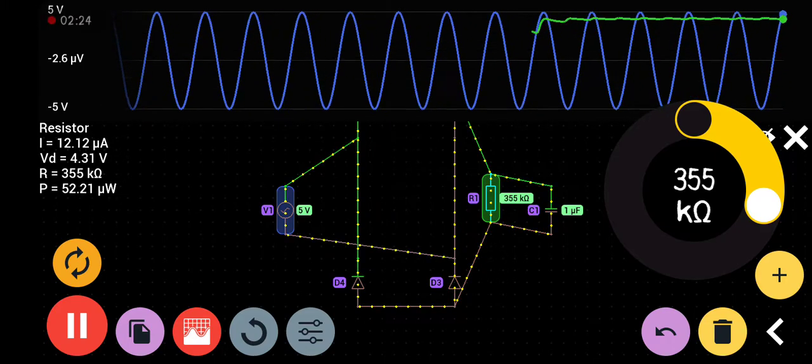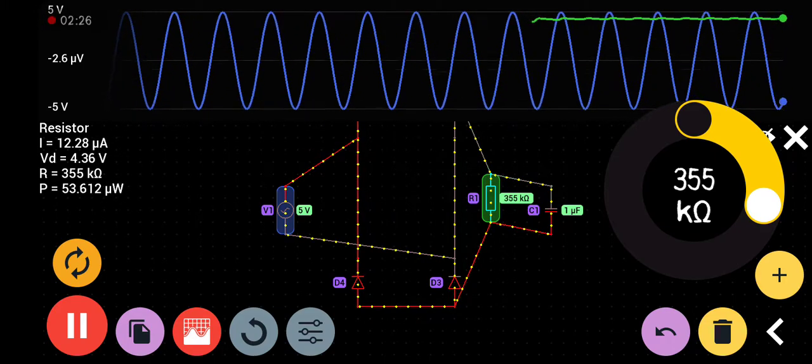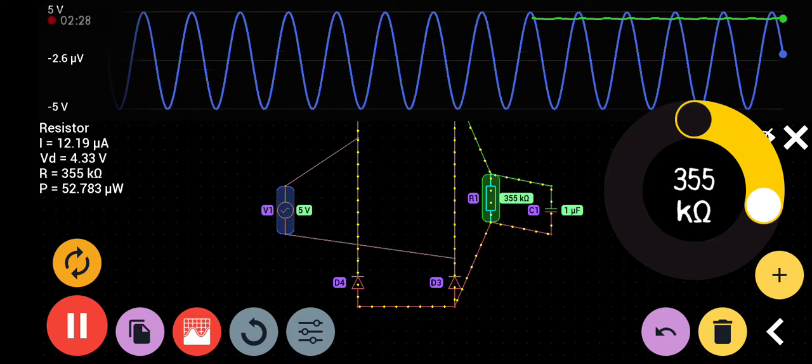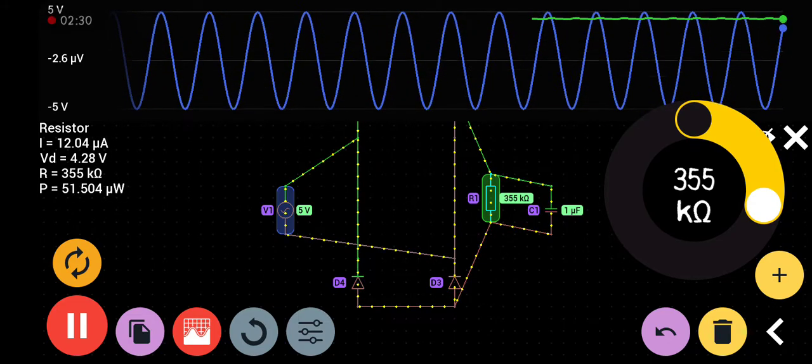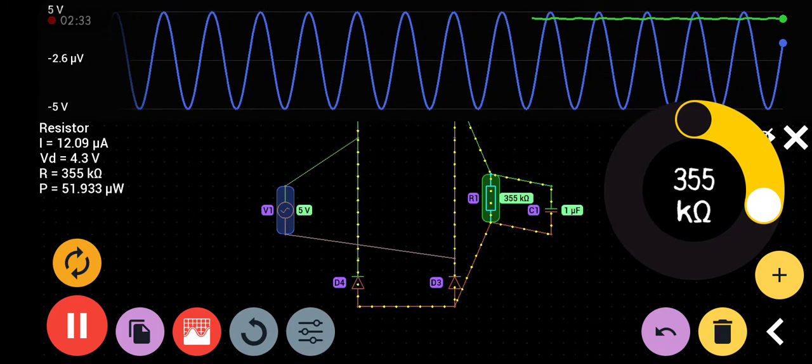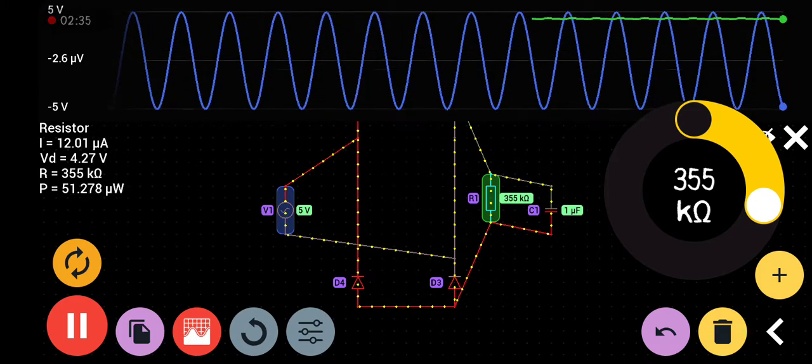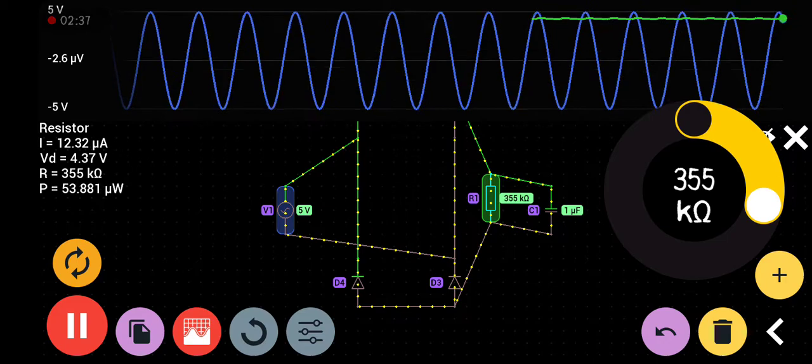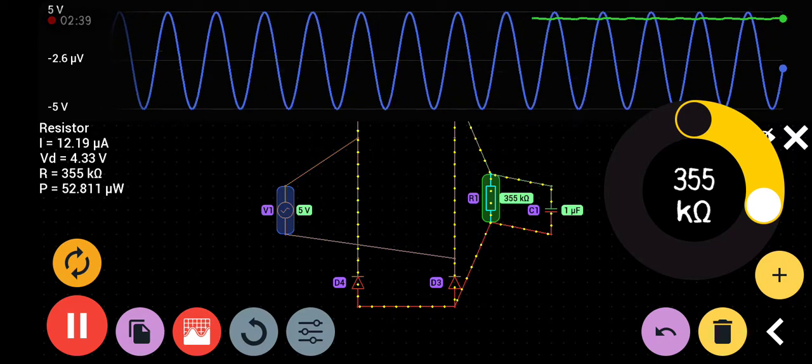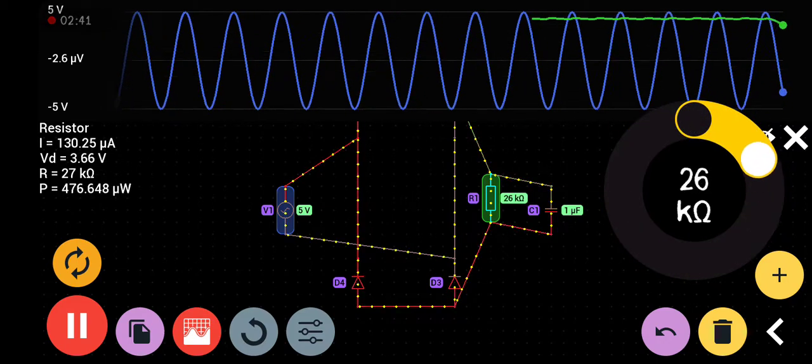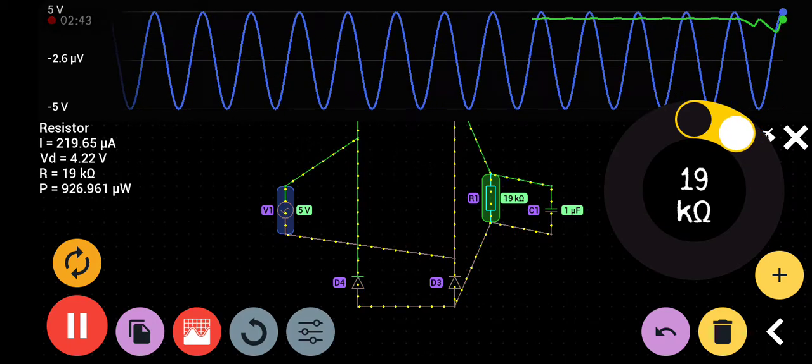Now we can observe capacitance. How can we change the capacitor and what is the response of the circuit and output waveform? We can set the resistance to 10 kilo-ohm and now change the capacitance.